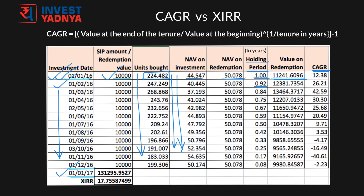CAGR is something that will tell you what are the annualized returns each of your SIP investments, treating each as a separate investment, has generated for you. The formula for CAGR is: value at the end of the tenure (your redemption value) divided by value at the beginning (your SIP amount), raised to the power of 1 divided by your tenure in years, minus 1, multiplied by 100.